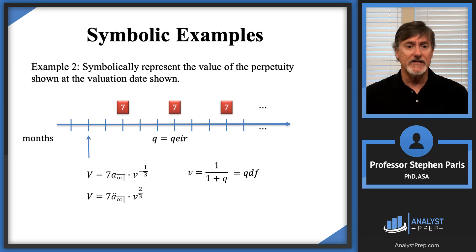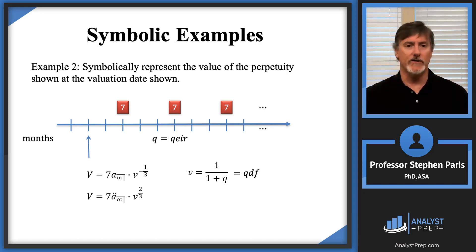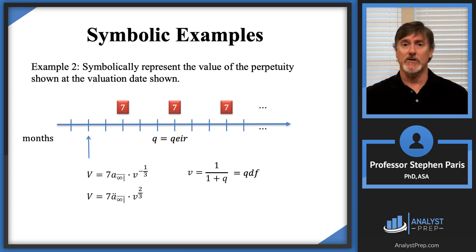Both expressions are acceptable: seven times A-angle-infinity times V-to-the-minus-one-third, or seven times A-double-dot-angle-infinity times V-to-the-two-thirds — both give the value of the perpetuity at the valuation date. These are good examples that will reappear later in the course when we look for numeric values of these annuities and perpetuities. We'll do more symbolic examples in the next video.